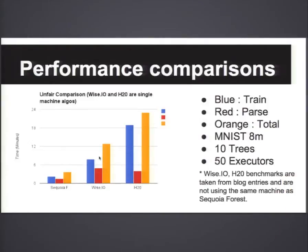This is an admittedly unfair comparison of our method to wiseIO and H2O, but they published their benchmarks in blog posts and we compared performance using the same dataset. We can finish 10 trees on MNIST 8 million — reading the dataset and training combined — in under four minutes. Whereas wiseIO takes about 30 minutes and H2O takes more than 20 minutes.